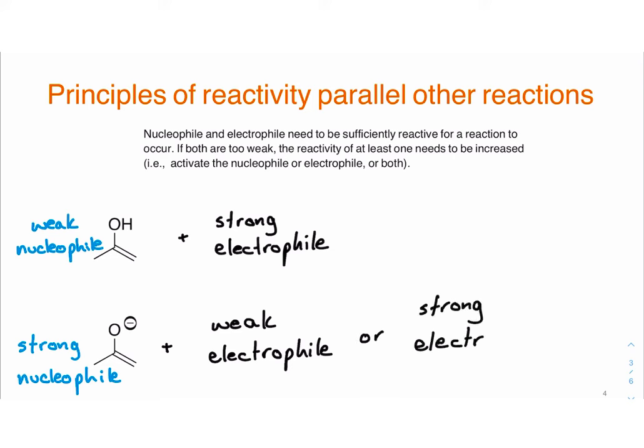The strong-strong pair certainly works. The problem with a really reactive system of two really reactive species is that you can get over-addition or over-reaction. Even the products of a first reaction step can still be quite reactive and can go on to react with other things.